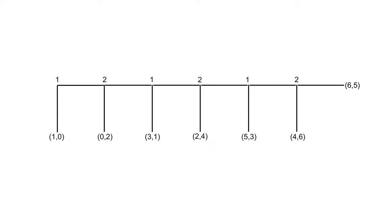The numbers one and two along the top of the centipede represent the decision nodes for two players. At the first node, player one has the choice to take or pass. If player one passes, player two has the choice to take or pass, and so on. At the final node, the game ends regardless of what player two chooses.